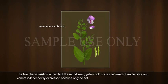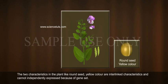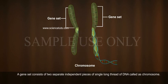How does a germ cell produce a single gene set from two copies of each cell? The two characteristics in the plant, like round seed and yellow color, are interlinked characteristics and cannot be independently expressed because of the gene set.